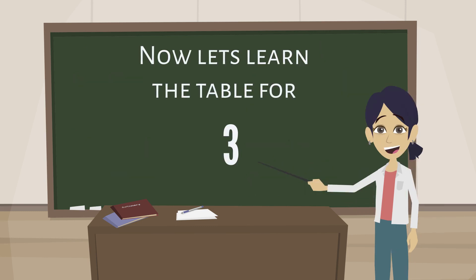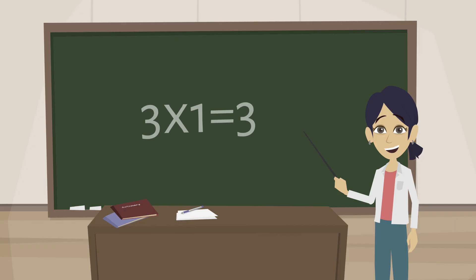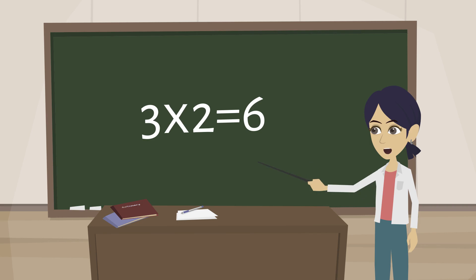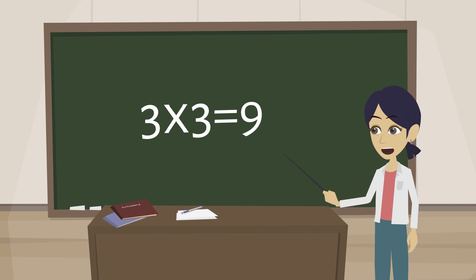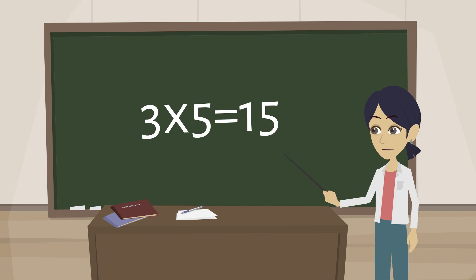Now let's learn the table for 3. 3 1s are 3, 3 2s are 6, 3 3s are 9, 3 4s are 12, 3 5s are 15,